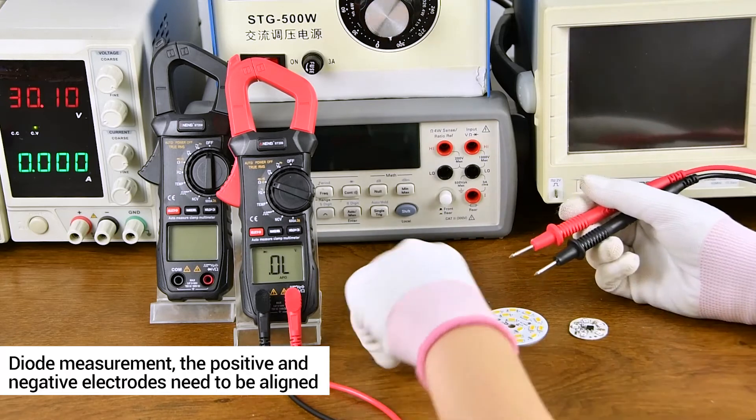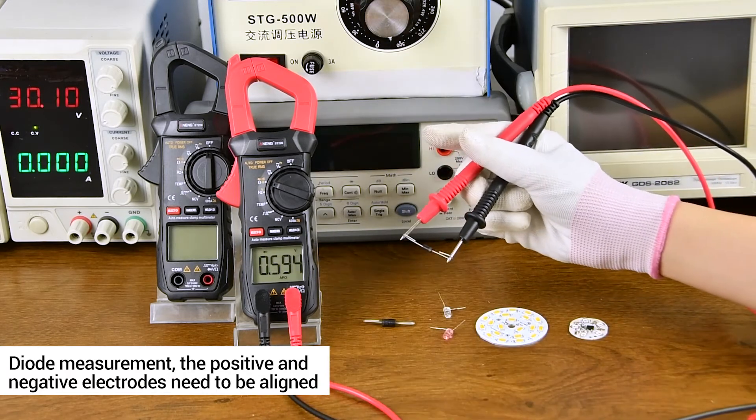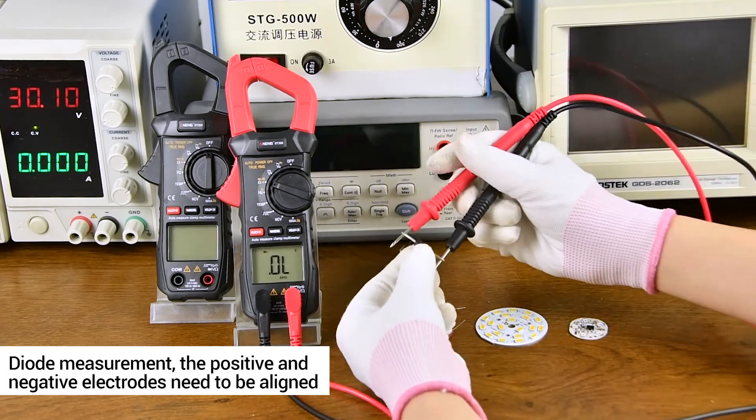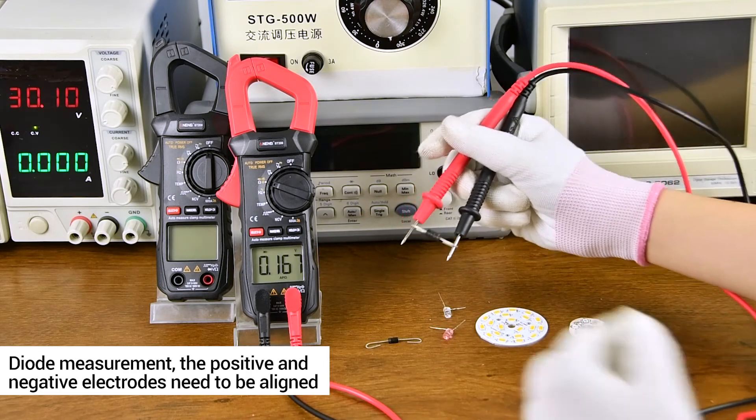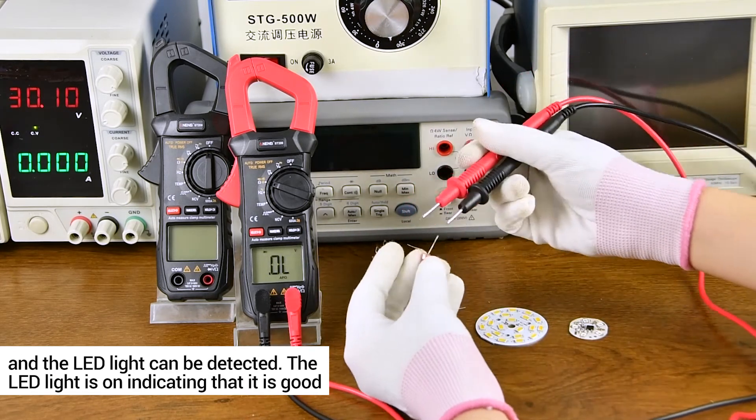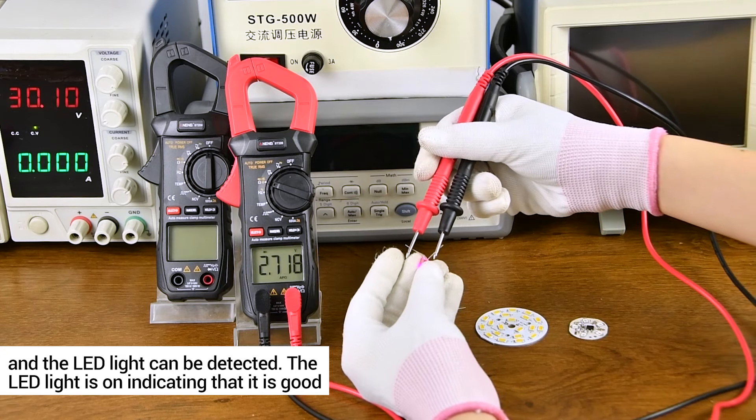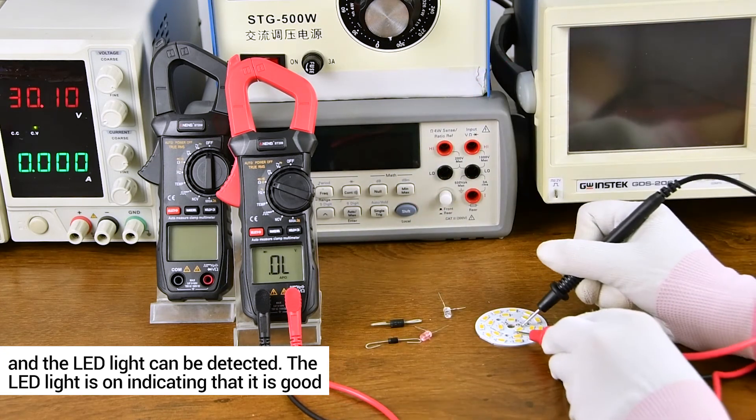Diode measurement. Detection of LED lights. Light on indicates that the light is good.